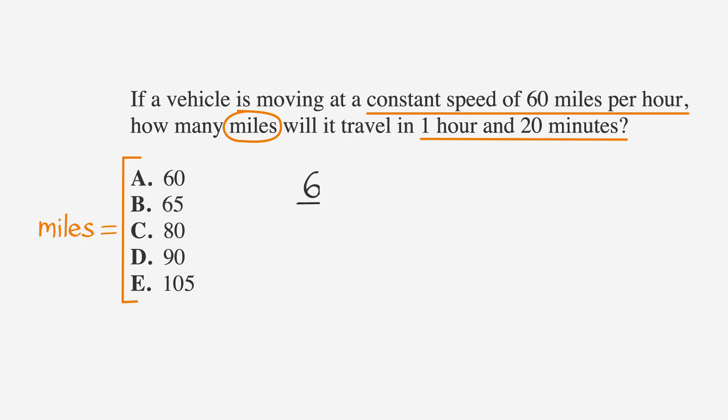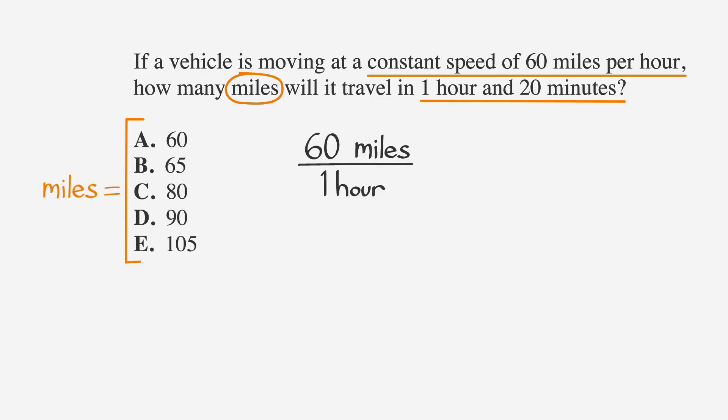Let's set up a ratio using the units of measure given in the problem. So, we're going to write 60 miles per hour. We can think of the division line of the fraction as the word per. Now that we have our first ratio, let's use the units of measure to create our equation. We're looking for the number of miles traveled during 1 hour and 20 minutes. So, we'll write our equation, making sure to match up our units of measure: 60 miles per hour equals x miles over 1 hour and 20 minutes.